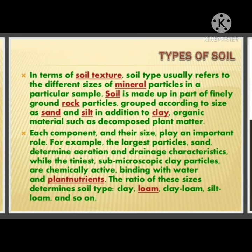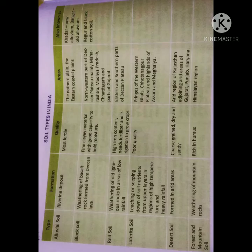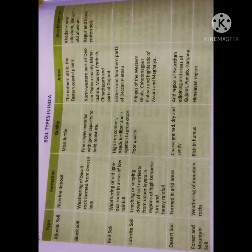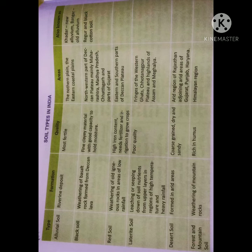Soil texture types include clay, loam, silt loam, and so on. Types of soil in India: Alluvial soil — formed from riverine deposits, it is the most fertile soil, found in the northern plains and eastern coastal plains, also known as khadar (new alluvial) and bhangar (old alluvial). Black soil — formed from the weathering of basalt rock from the Deccan lava; it is a fine clay material with good capacity to hold moisture, found in the north-western part of the Deccan plateau, mainly Maharashtra, Madhya Pradesh, Chhattisgarh, and parts of Gujarat; also known as regur and black cotton soil.